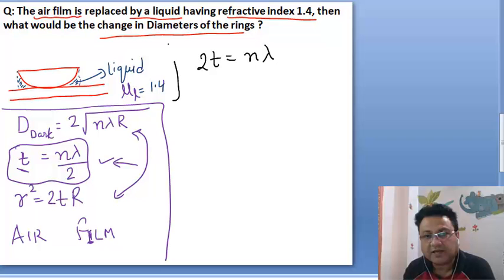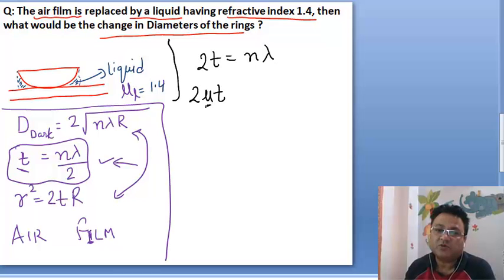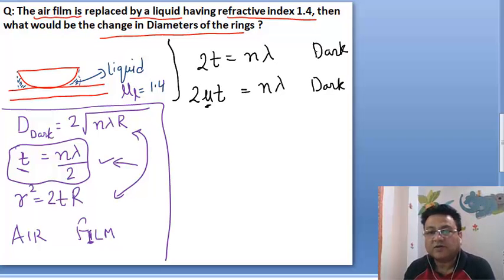When I use optical distance, this is mu also for dark ring. This is the formula for air film and this is the formula for any film.